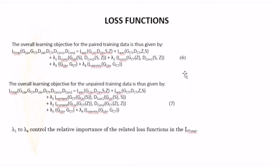The overall learning objective for the paired training data is thus given by all of the total loss that we already mentioned before. For the paired training data, we will use equation number 6. And then for the second cycle, or the unpaired training data, it will be given by equation 7. As we can see, they have lambda 1 to lambda 4. Lambda 1 to lambda 4 control the relative importance of the relative loss functions in the loss total.